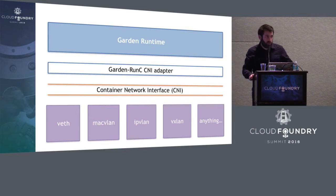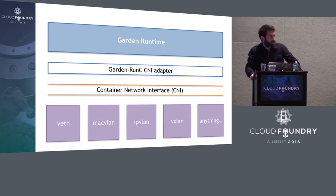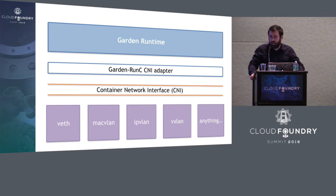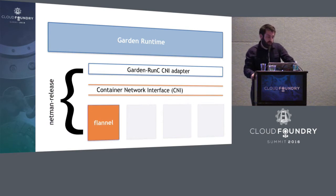If you were in this room a few minutes ago, you heard a talk about Garden and Garden RunC, which is the next version of the backend for the Garden API. What our team has been working on the last few months is an adapter between Garden RunC and the Container Networking Interface specification for wiring up containers to networks. What we've got is this adapter layer that lets us drive, via the CNI plugin interface, any number of different CNI plugins which are available. If you look this up on GitHub, you can see there are a number of existing reference implementations of CNI plugins. We have this thing called NetMan release — it's a BOSH release you can look up today — and it uses the flannel CNI plugin and provides layer three connectivity between containers.